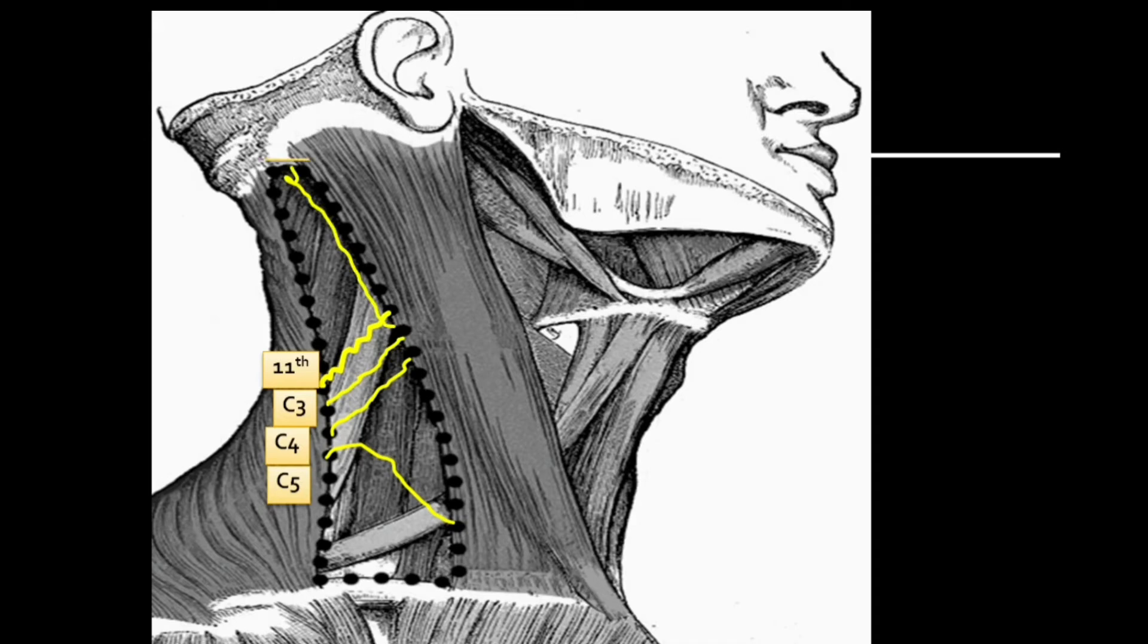We can see four cutaneous nerves. This one is the lesser occipital nerve, C2, which emerges around the posterior border of the sternocleidomastoid and supplies the structures around it.